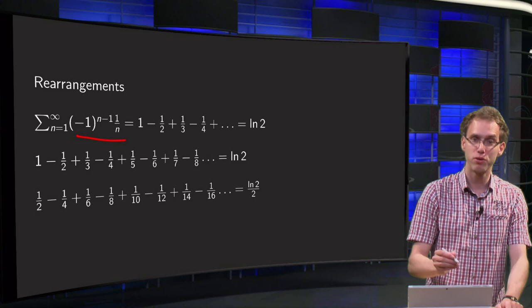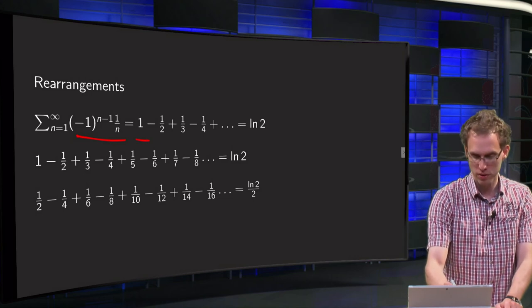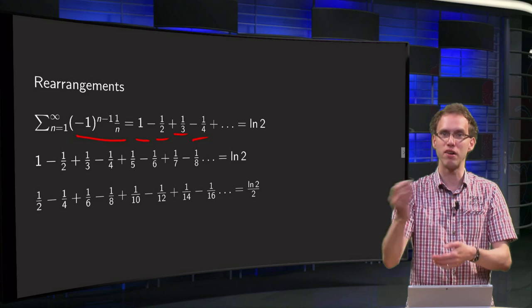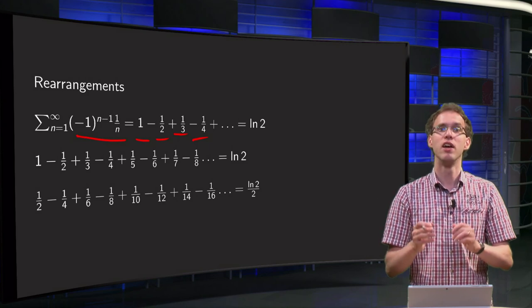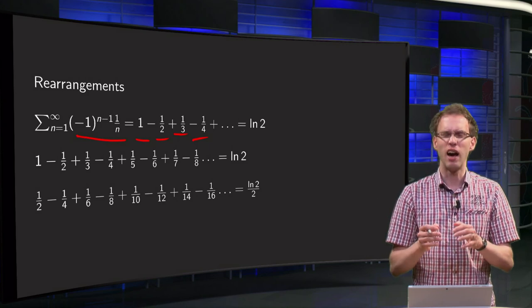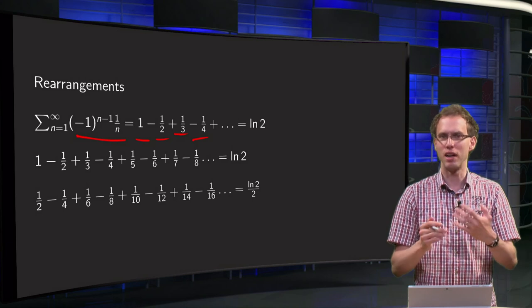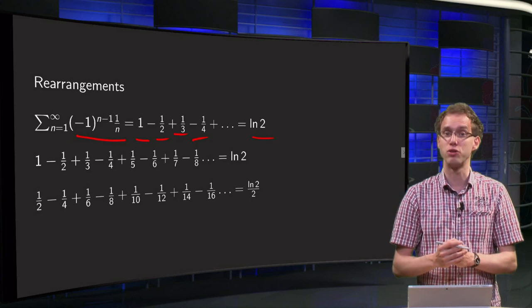Let's write down the first few terms: it equals 1 - 1/2 + 1/3 - 1/4 + 1/5 - 1/6, etc. We know that it converges. The sum is not that important here, but later on we will learn that it equals ln 2.